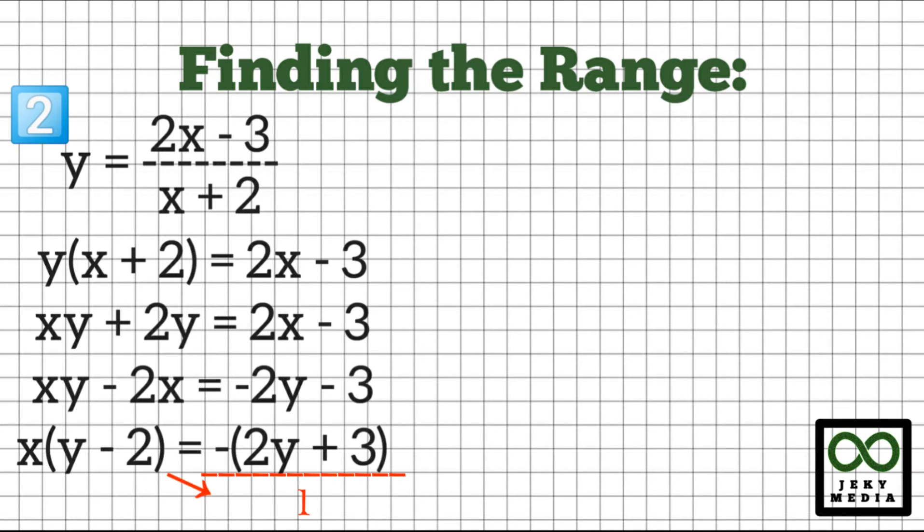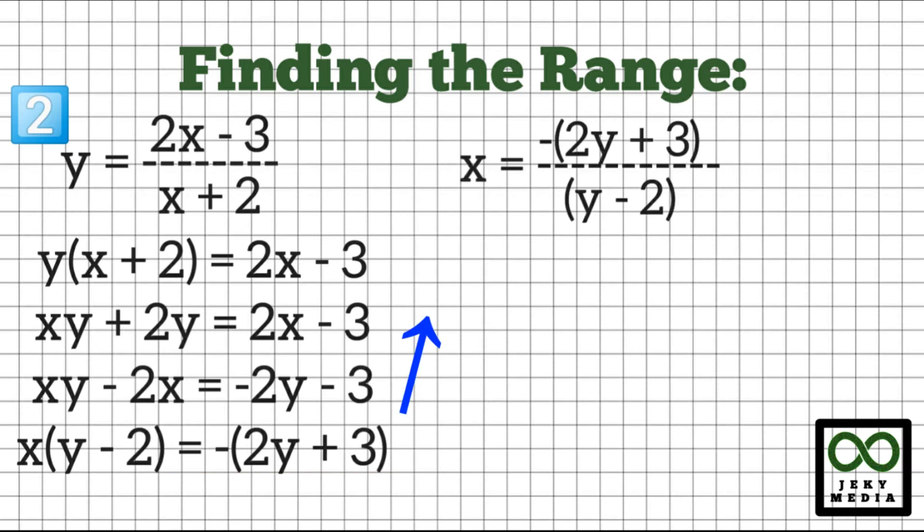Now let's multiply (y minus 2) to the denominator on the right side to isolate x on the left side. This will become x equals the negative value of (2y plus 3) over (y minus 2).